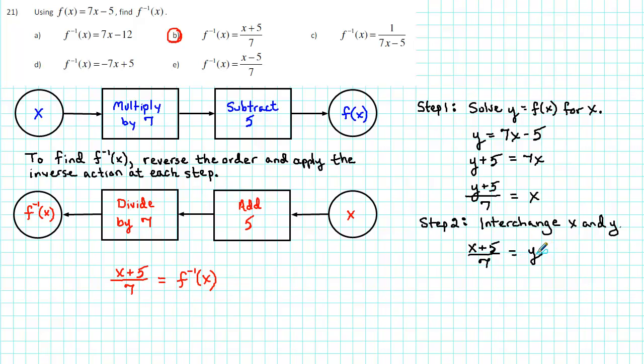And then finally, the last step is to let y be equal to f inverse of x. Notice that we get the same result: f inverse of x is equal to x plus 5 over 7.